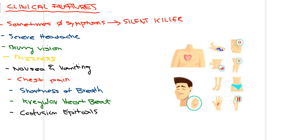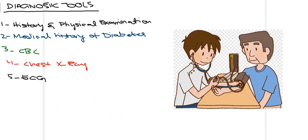Additional symptoms include irregular heartbeat, confusion, and epistaxis. These are the most common features a patient presents with in a suspected case of hypertension, and they are really important to look for when evaluating a suspected case.